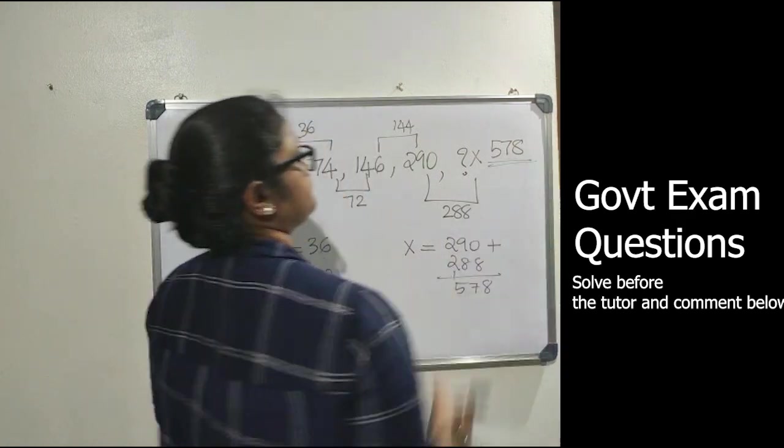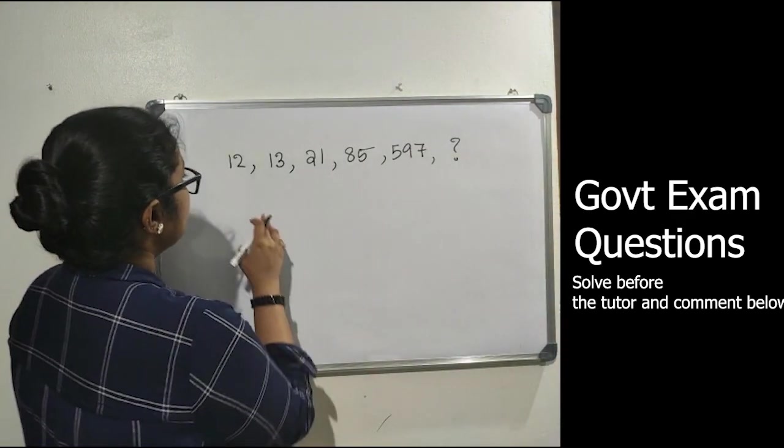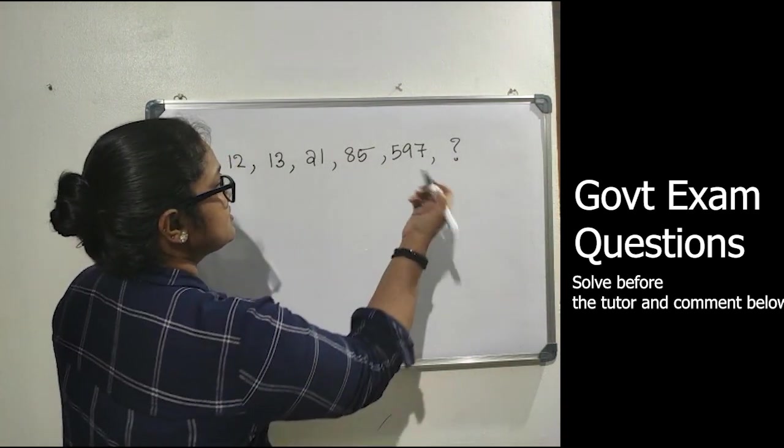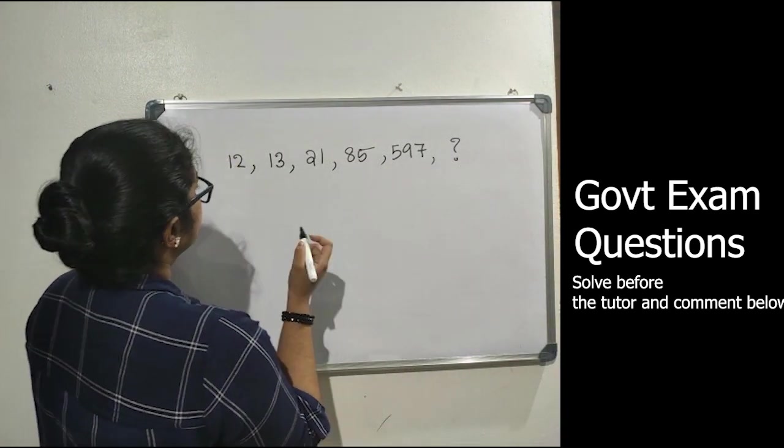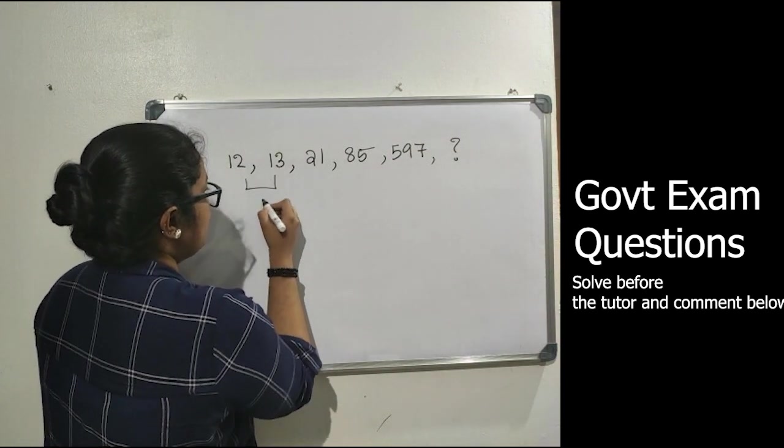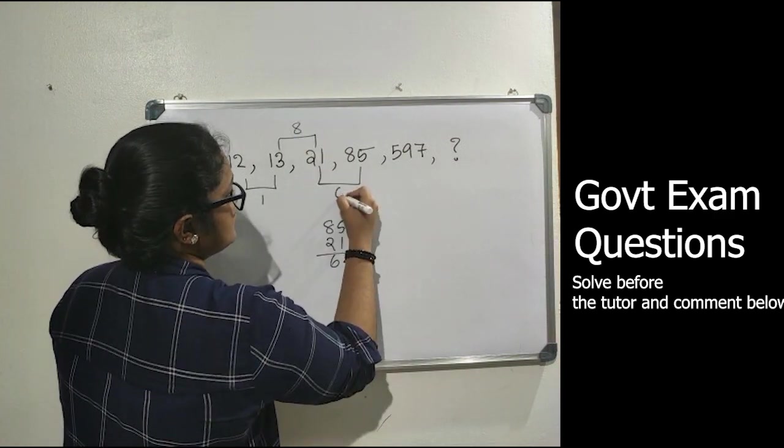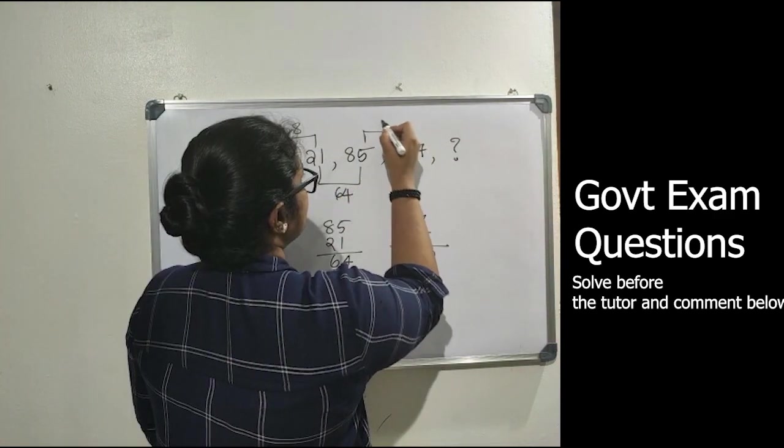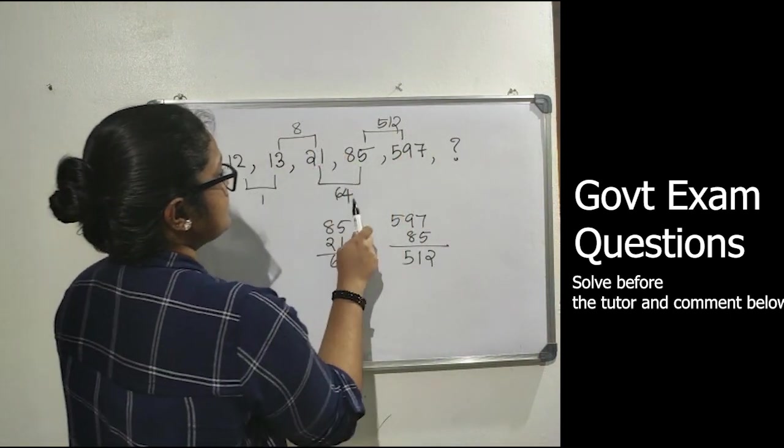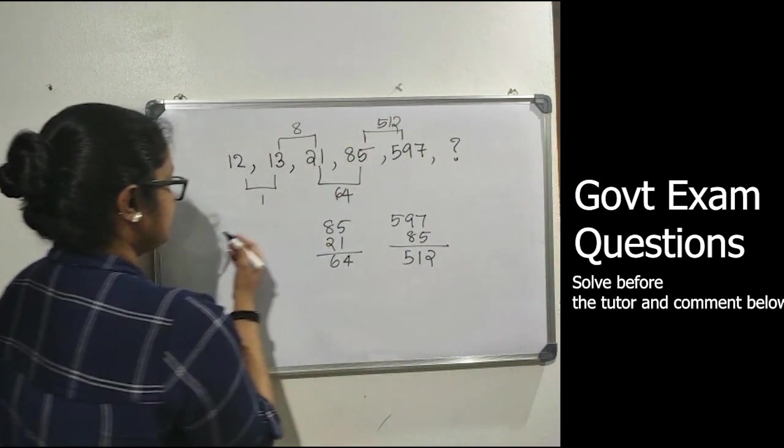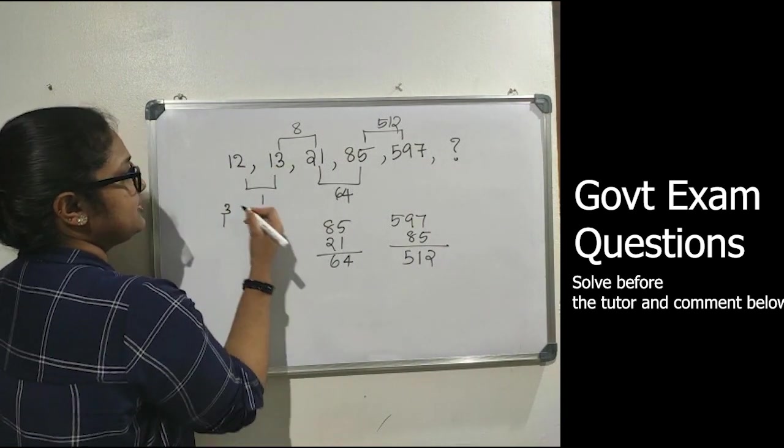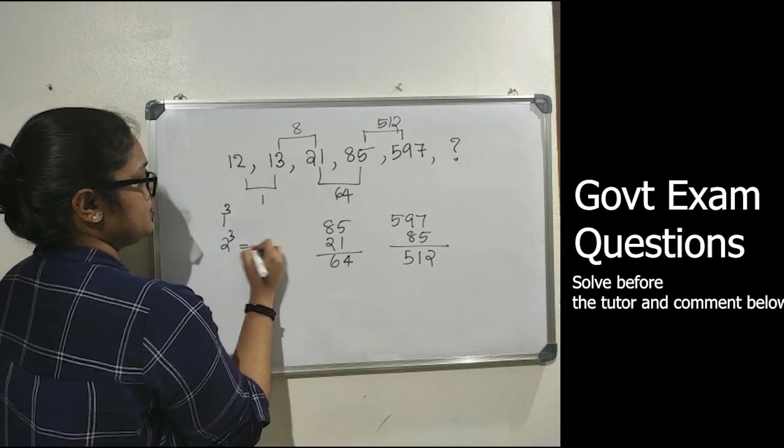Next question is 12, 13, 21, 85, 597, and the last number is unknown. Let's see the difference between 12 and 13, that is 1. Then 8, 64, 512. Now upon seeing the difference we can see the difference between first two numbers is 1 cubed, next is 2 cubed equals 8.